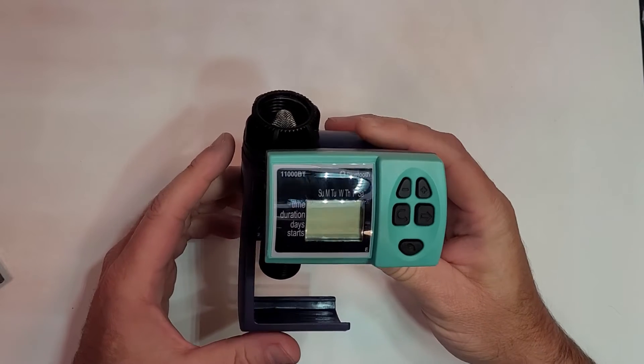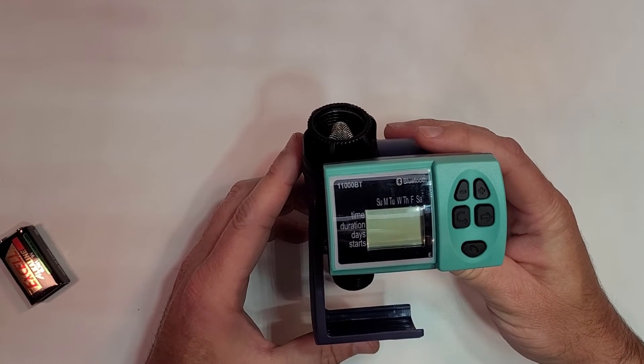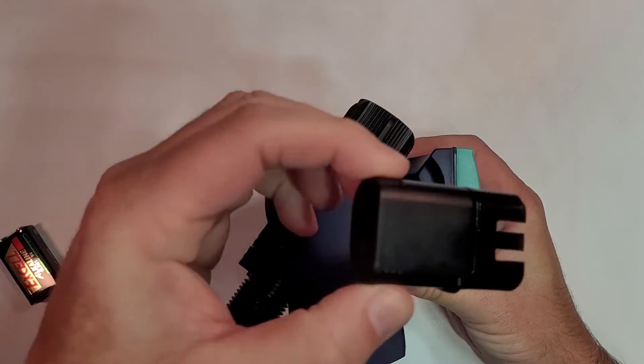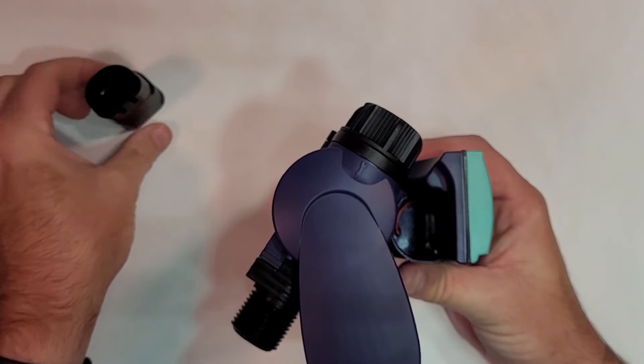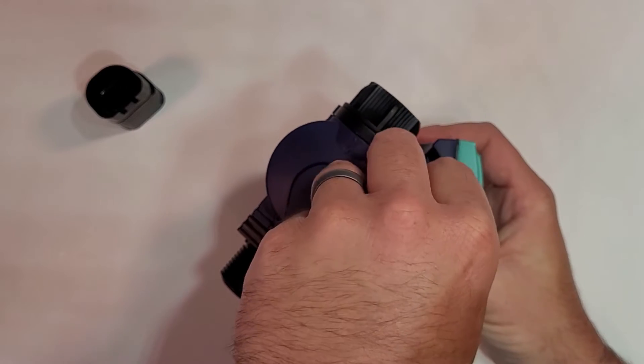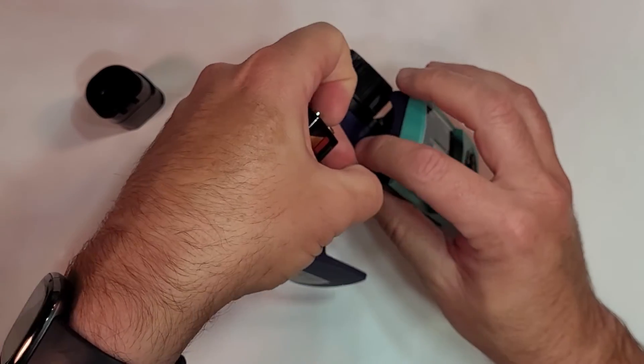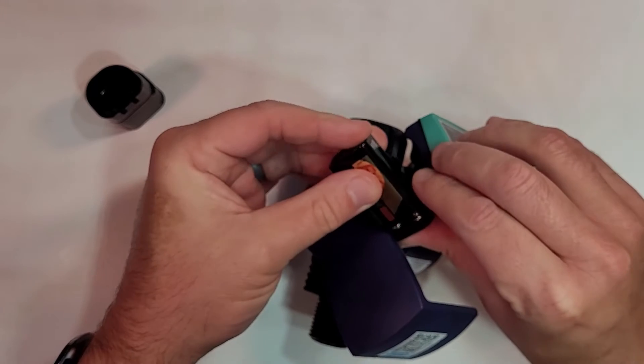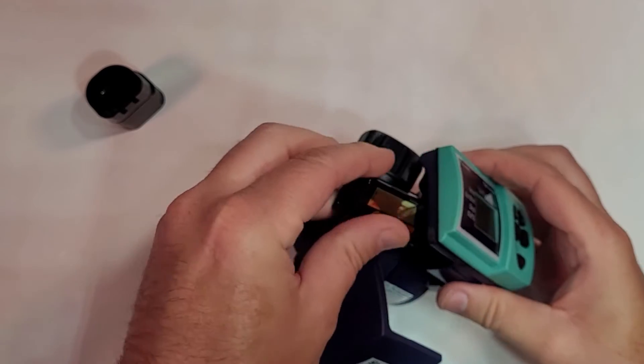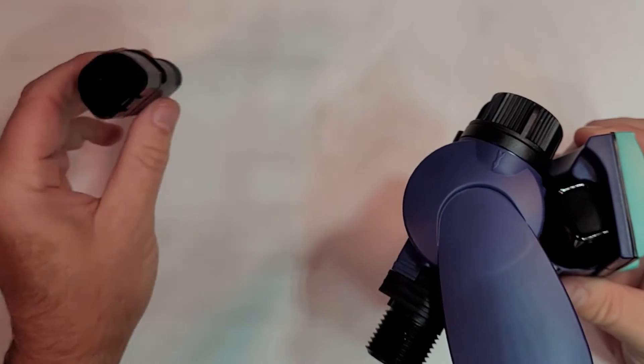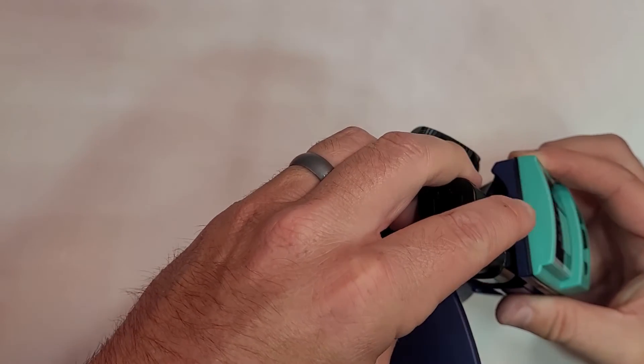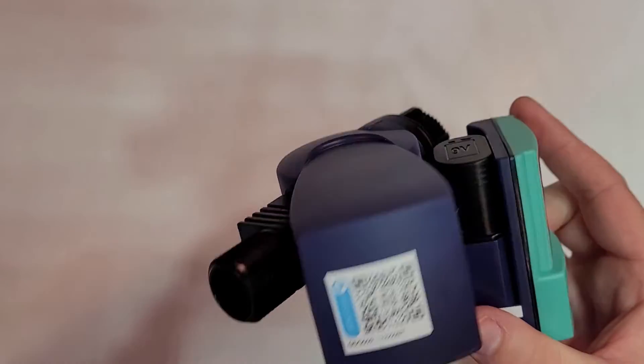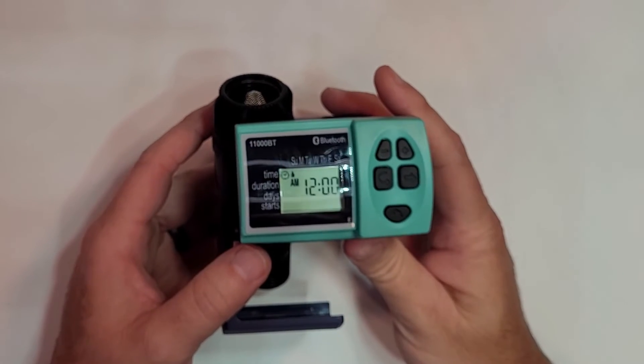Today we're going to set up the 11,000 BT tap timer. Step number one is we're going to remove the battery box. There's a little grease and a little o-ring, so set it up on its end just like that. Then we're going to fish the wire out of there a little bit, snap positive and negative connections down on there, slide everything back in, and make sure you get your flat side toward the display. Slide it all the way back in to where that o-ring seals up really nice. Now we have 12 PM flashing on the screen.